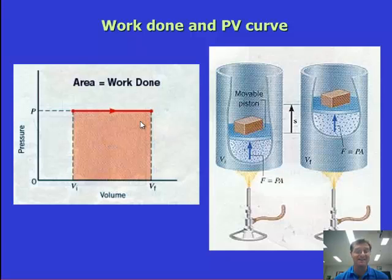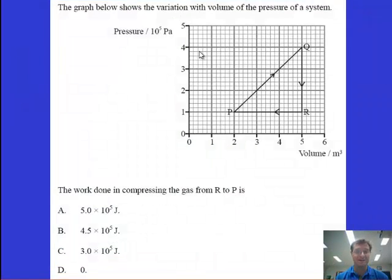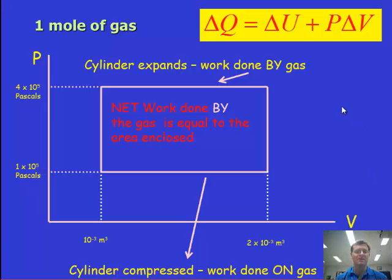Here's an example question. The graph shows the variation of volume of the pressure of a system, a rotating system. What work is done in compressing the gas from R to P? Thinking about what work is done here, we just look at the options. We know that the work done is the area underneath the graph from R to P, so that means the work done on the gas is 3 times 10 to the 5 joules. That's how much work has been put in to cause this compression.